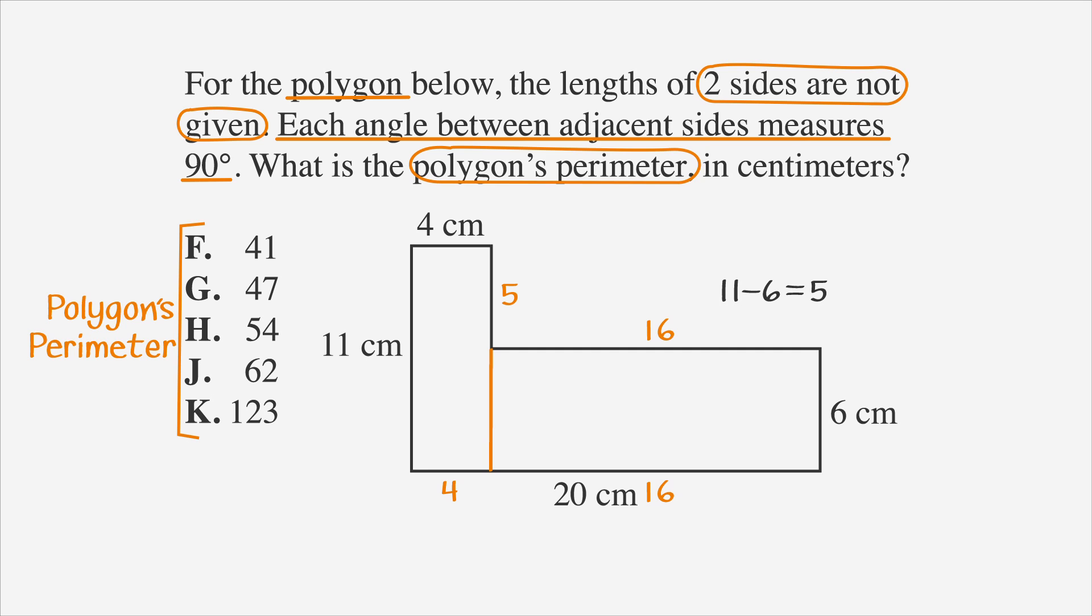We can add 11 plus 4 plus 5 plus 16 plus 6 plus 16 plus 4 to find our perimeter. We end up with 62, which is choice J.